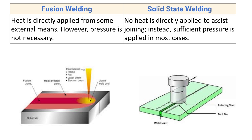In solid state welding, no heat is directly applied to assist the joining. Instead, sufficient pressure is applied in most cases. No heat is directly applied over the faying surface; rather, pressure is applied, and as a consequence of that pressure, heat is generated and utilized to join the two base components.